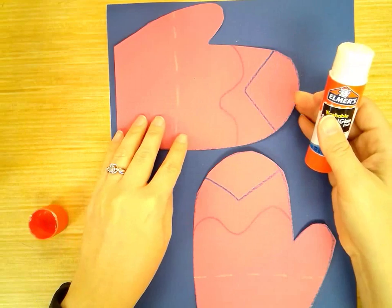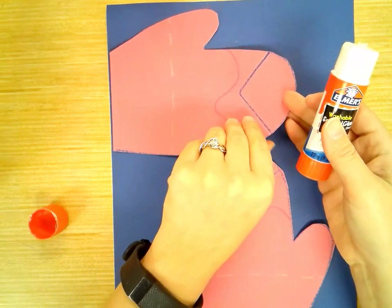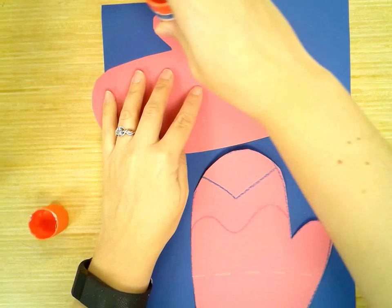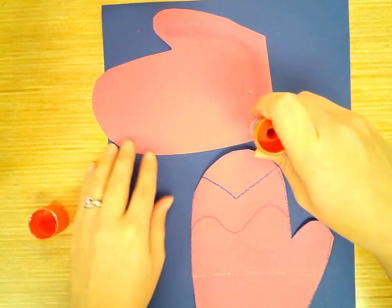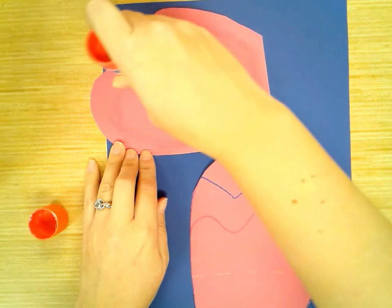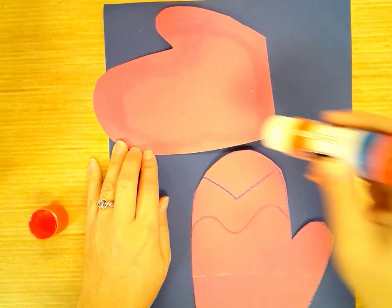And then we're going to take this mitten, and we're going to flip it over and put glue on the thumb and around the outside edge. And then you can put one line down the middle.